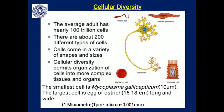An average human adult has nearly 100 trillion cells, and there are about 200 different types of cells in the human body. Examples include the sperm cell, smooth muscle cell, neuron, epithelial cell, and red blood cell (RBC). From this, you can understand that cells come in a variety of shapes and sizes — this is cellular diversity.